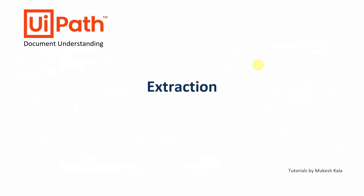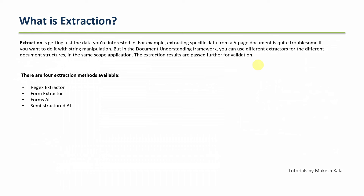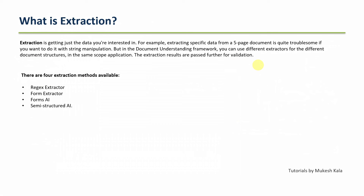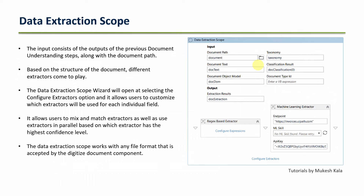Today we look at the extraction stage. Document understanding has been able to read and digitize data, and now it can confidently say 'yes, this is an invoice' or 'yes, this is a receipt.' Once that classification is confident, the next stage is extraction — determining what data to pull from the document and actually extracting that information.